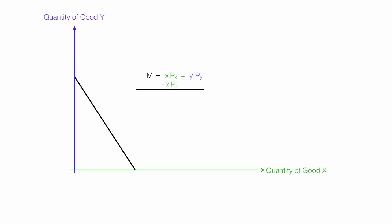I'm going to subtract from both sides of the equation negative XPX. On the left-hand side, I end up with M, or income, minus the quantity of X times the price of X. These items on the right-hand side cancel out. This is equal to the quantity of Y times the price of Y.